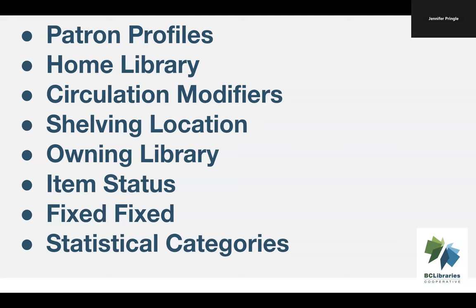Owning library shows which library or branch actually owns the item — more important for multi-branch libraries than single branch. Item status is another piece of data that can cause problems if incorrect. If an item is on your mending shelf but its status in Evergreen shows as available, your patron and staff probably aren't going to be able to track that item down.